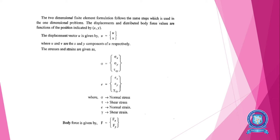In this method, the displacement vector u is given by u = [u, v]. In one-dimensional problems, we select displacement as u, but here in two-dimensional problems we consider displacements as u and v, where u and v are the x and y components of u respectively.